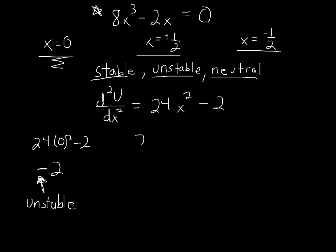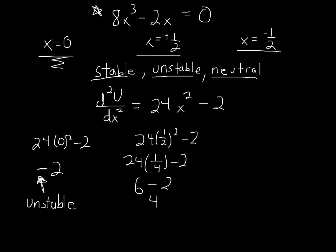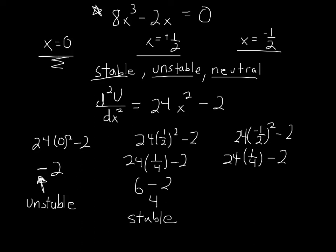Let's plug in positive 1/2: 24 times (1/2) squared minus 2. That's 24 times 1/4 minus 2, which is 6 minus 2, and that gives me 4. This is positive — a positive second derivative means a stable equilibrium point. And finally, let's look at negative 1/2: 24 times (negative 1/2) squared minus 2. That gives me 24 times 1/4 minus 2, which is 6 minus 2 equals 4. This is also a positive number, so I have a stable equilibrium point.